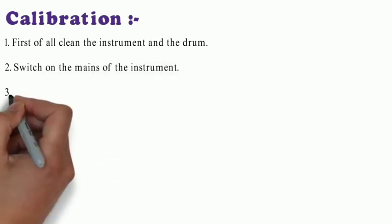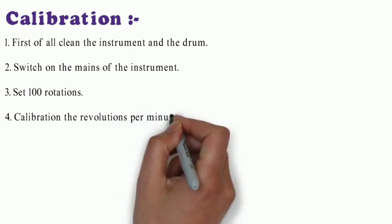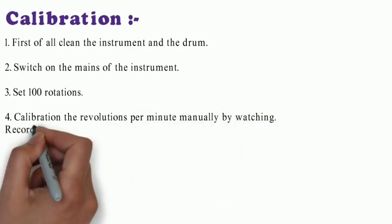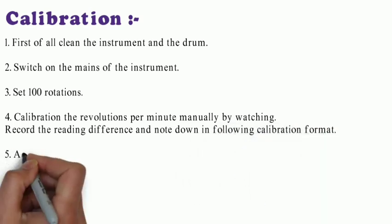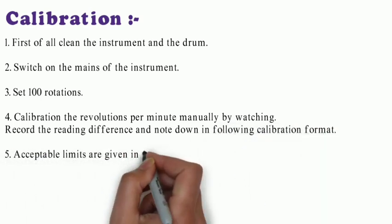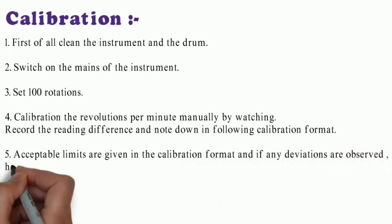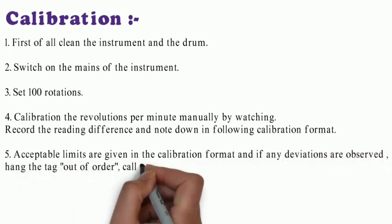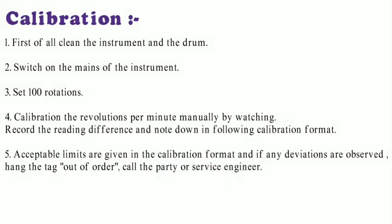Switch on the main power of the instrument, set 100 rotation. Calibrate the revolution per minute manually by watching and record the reading difference. Note down in the calibration format. Acceptable limits are given in the calibration format. If any deviations are observed, hang the tag out of order and call the service engineer.